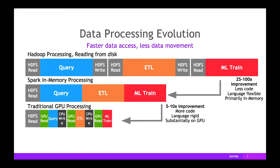Spark came along with the idea of keeping all the data in memory at once — read once, maintain this in-memory data structure for all your work, then write at the end. That was a big deal: 25 to 100 times faster, less code, and also language flexible, giving us things like PySpark and ScalaSpark. There's incredible productivity gained by not having to write MapReduce jobs.